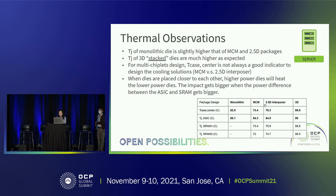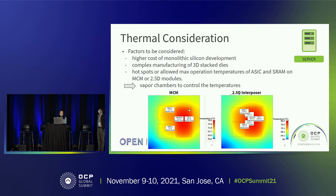Last but not least, when dies are placed closer to each other, higher-power dies will heat the lower-power dies. The impact gets bigger when the power difference between the ASIC and SRAM gets bigger. As you can see in this plot, for MCM and 2.5D interposer, the ASIC die on the right dissipates about 200 watts, while the two SRAM dies dissipate only about 32 watts each. The heat from the ASIC die has an impact on the adjacent SRAM dies. In order to solve this hot spot problem, in the following slides we will demonstrate our vapor chamber design to show how it can help control the surface temperature and reduce the hot spot.